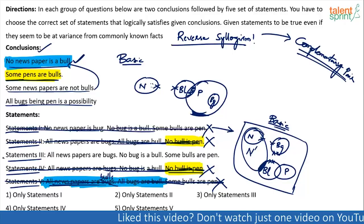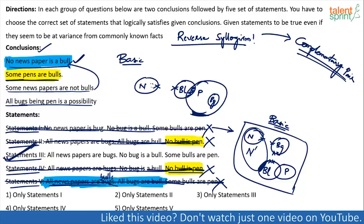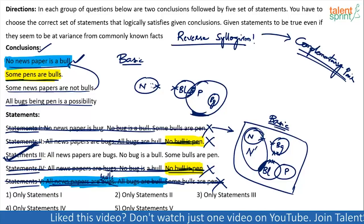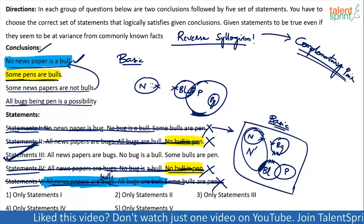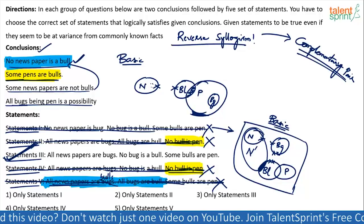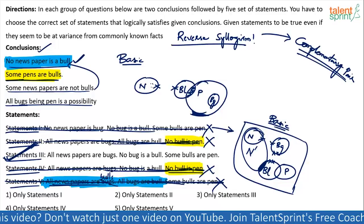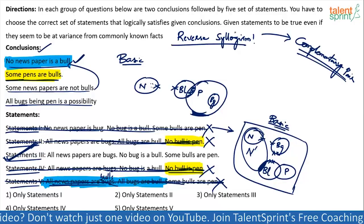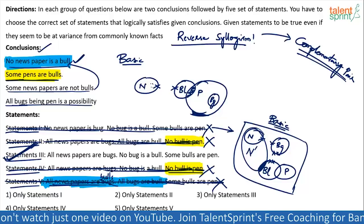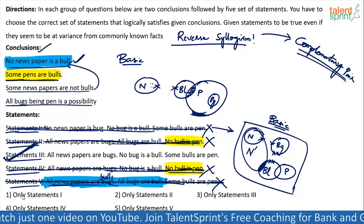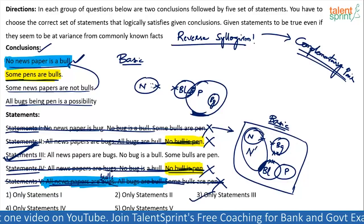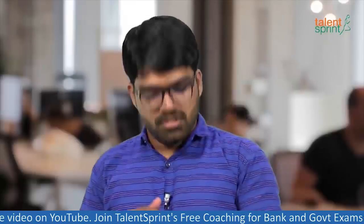Since first, second, fourth, and fifth are wrong, obviously the third one has to be correct. I will not waste time verifying the third one because definitely one, two, four, and five are wrong — so the answer has to be the third option. Statements three — only statements three, option three, is the answer. I hope all of you have understood this.